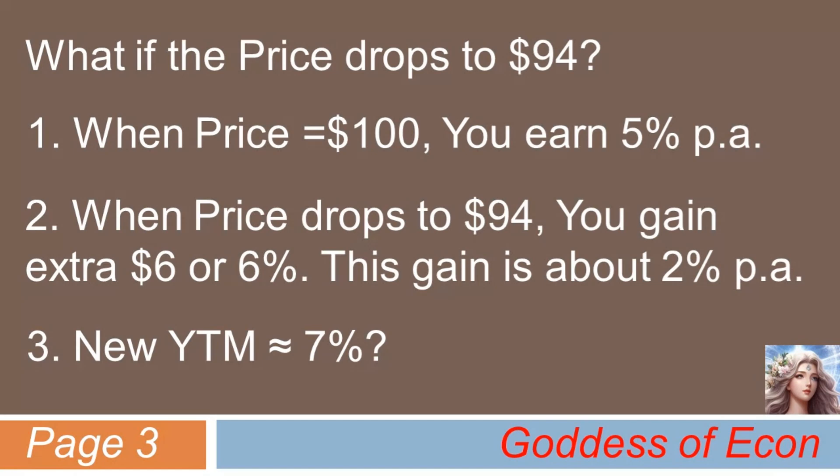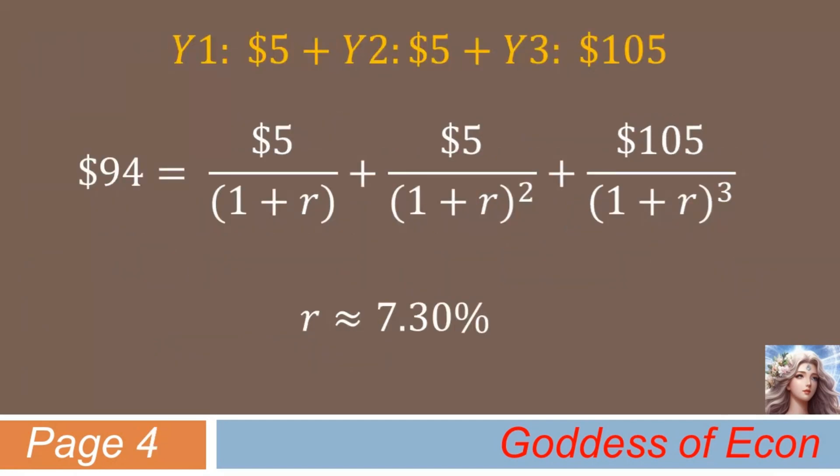Now, let's check if this is really the case. The true YTM we can find by trial and error comes out to be 7.3%. Of course, it is not exactly 7%, but close enough. It should be good enough an answer, especially given that it came out of your head, which even you don't trust in everyday life.